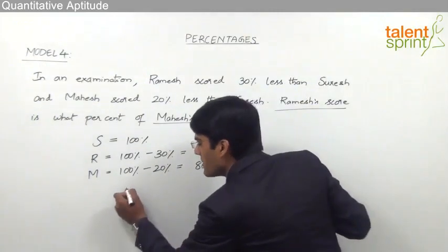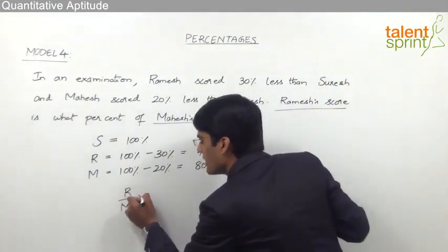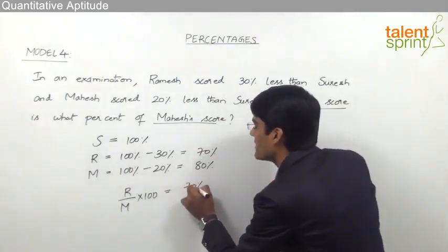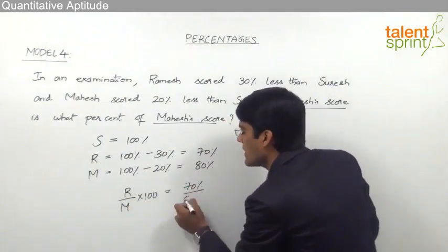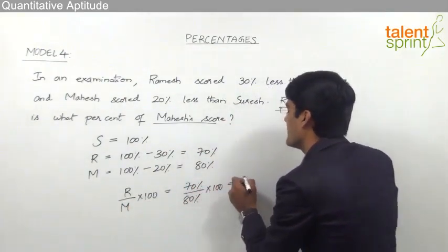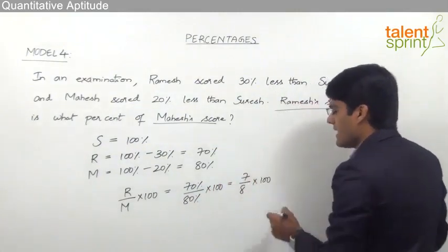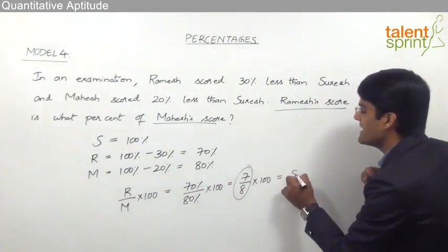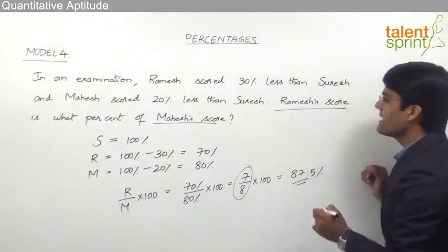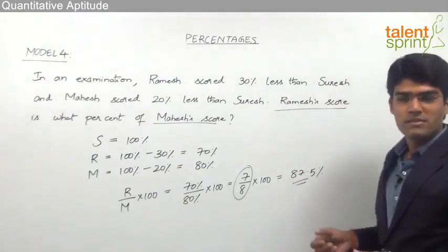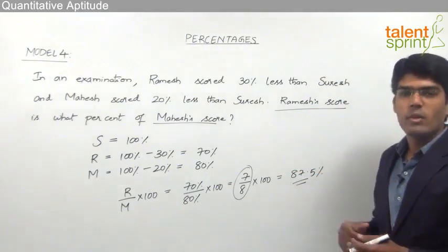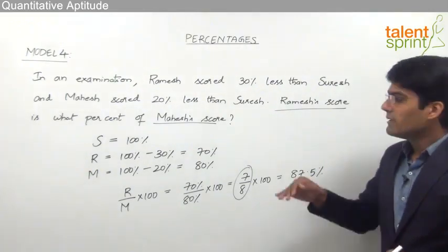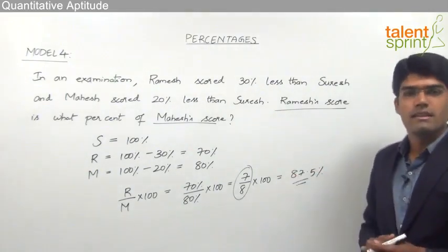Now we need to find Ramesh's score as a percent of Mahesh's score: Ramesh's score divided by Mahesh's score into 100. Ramesh's score is 70% and Mahesh's score is 80%, so this becomes 70 upon 80 into 100, which is 7 by 8 into 100. From fractions, 7 by 8 equals 87.5%, so Ramesh's score is 87.5 percent of Mahesh's score. This is how we apply the concept of x is what percent of y, which is more frequently asked in data interpretation.